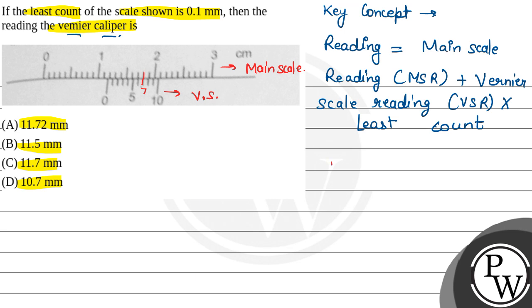Here, MSR, main scale reading, that is 1.1. So that is 1.1 cm, or we can say this is equal to 11 mm.